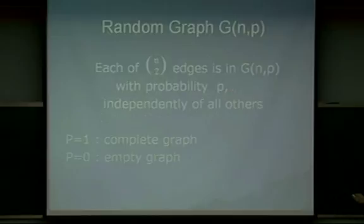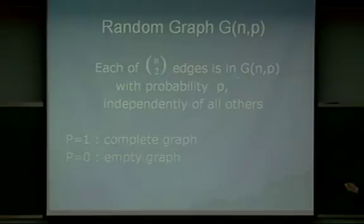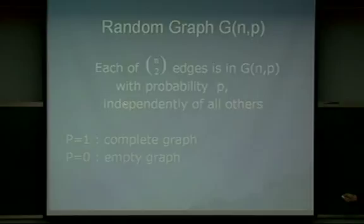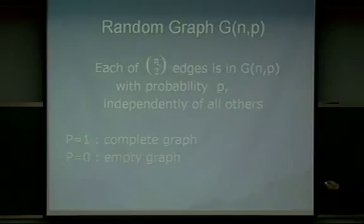Random graph G(N,P): consider the complete graph on N vertices — there are N-choose-2 edges — and each of these edges is in our random graph G(N,P) with probability P, and all edge probabilities are independent of all others. For example, if P equals one, then we choose every edge. If P equals zero, then we don't choose anything.